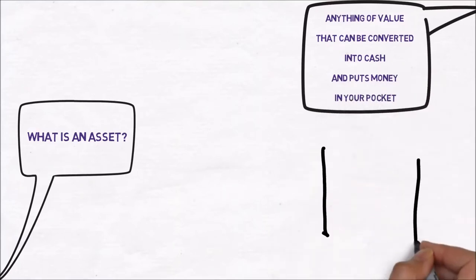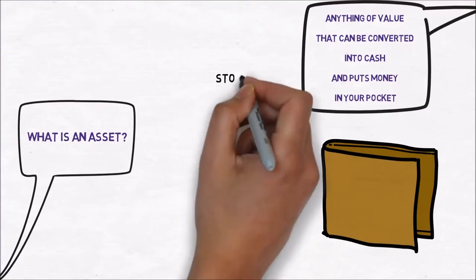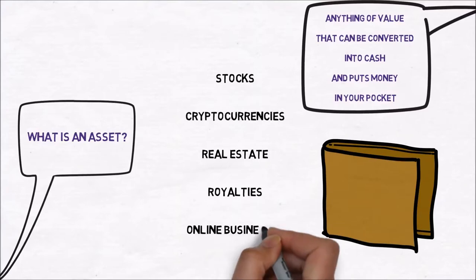Examples of assets are investments in stocks, cryptocurrencies, or real estate, but also royalties or businesses that don't require your presence, such as a lot of online businesses.